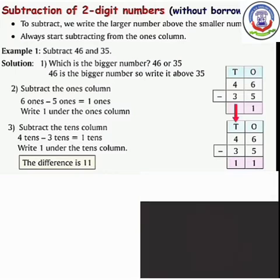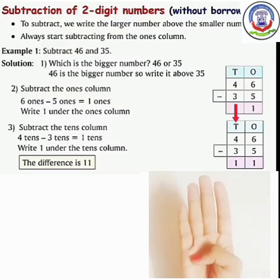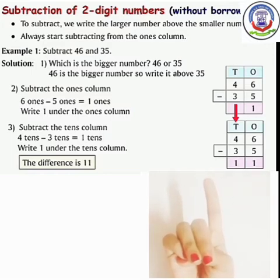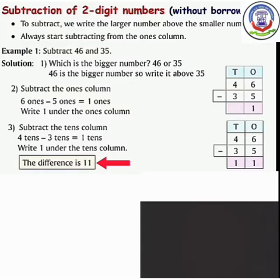अब हम 10s column में subtract करेंगे. Numbers कौन से हैं 10s column में? 4 and 3. Open 4 fingers and close 3 fingers. How many fingers are left? 1. So we will write here 1. The difference is 11.